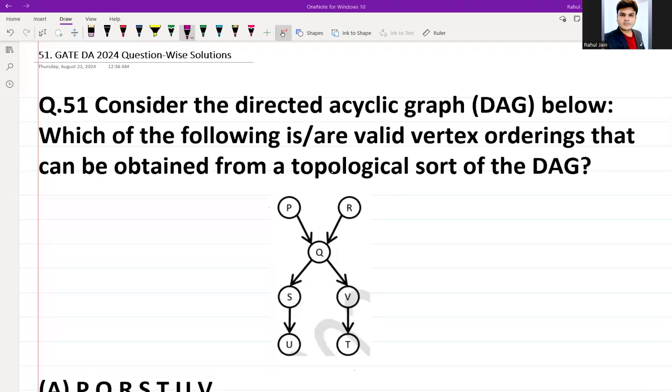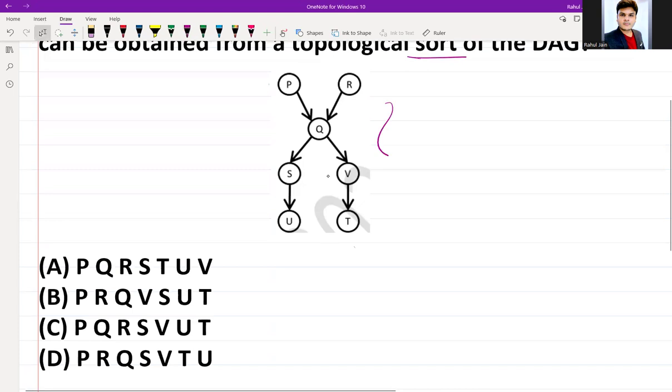Hey everyone, I hope you all are doing very well. The following question was asked in GATE DA 2024 for two marks, MSQ in nature. The question is as follows: Consider the directed acyclic graph (DAG) below. Which of the following is a valid vertex ordering that can be obtained from a topological sort of the DAG? The following graph is given.